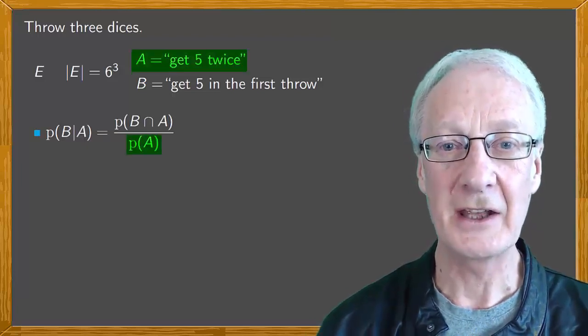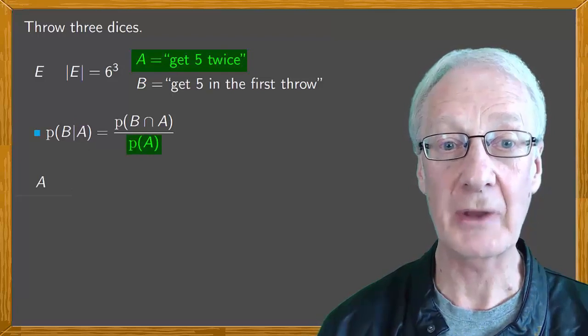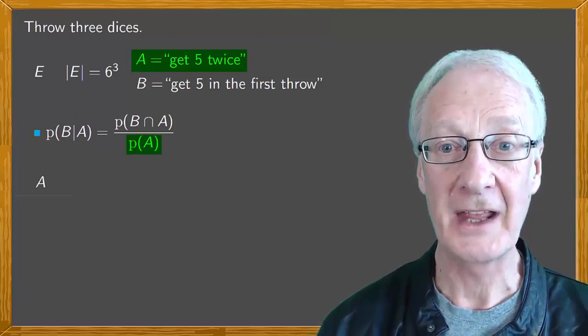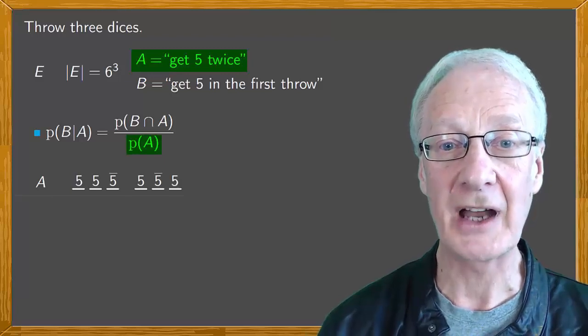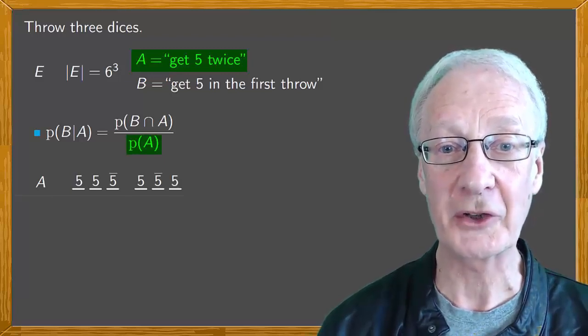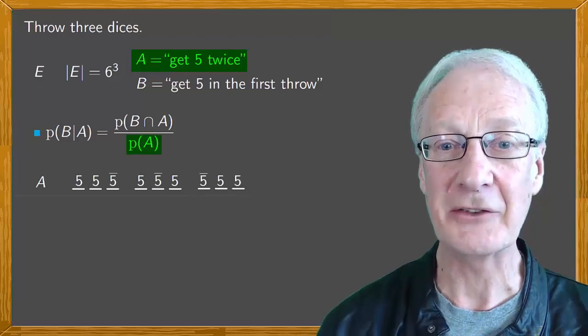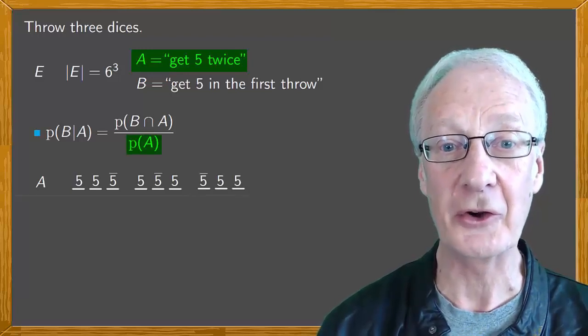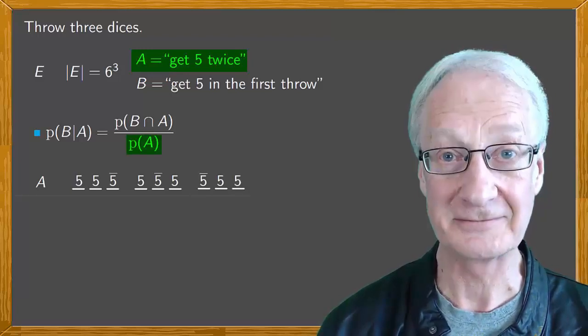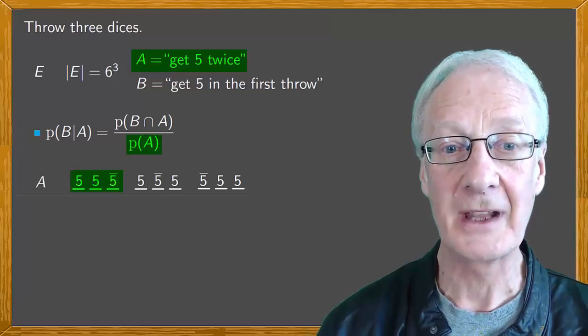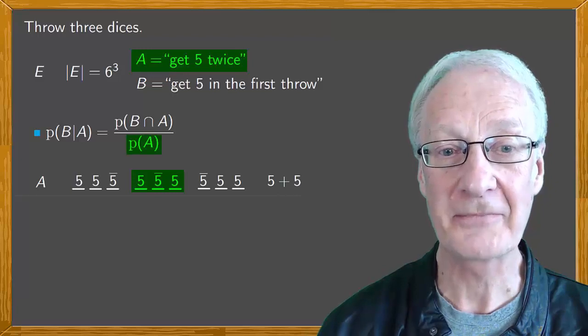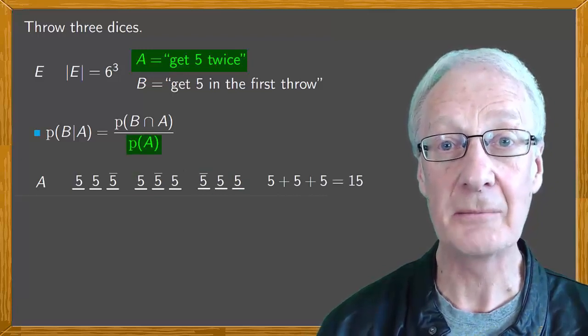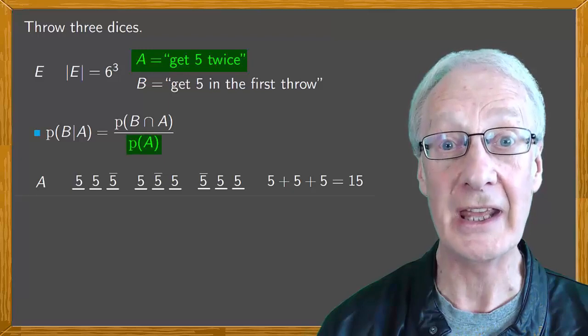For event A, getting five exactly twice, we have as possible results: Getting five on the first and second throws but not on the third. Getting five on the first and third throws but not on the second. And getting five on the second and third throws but not on the first. So, here we have five possibilities. Here five more, and here five more, giving fifteen possible results in all for A.